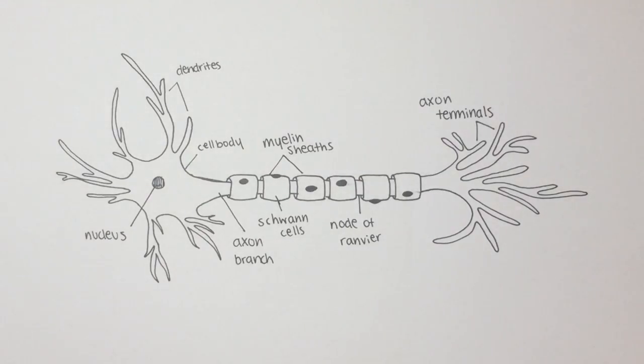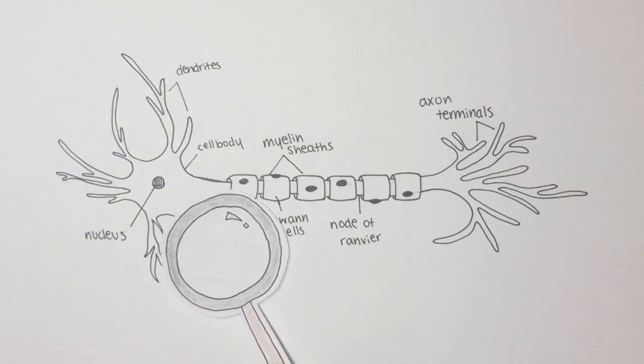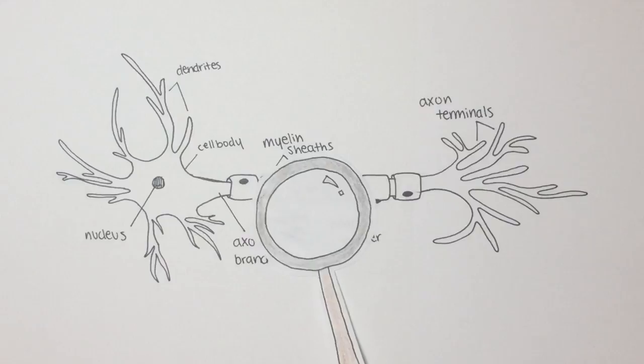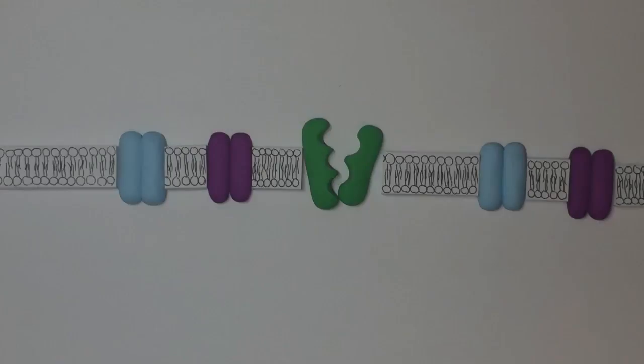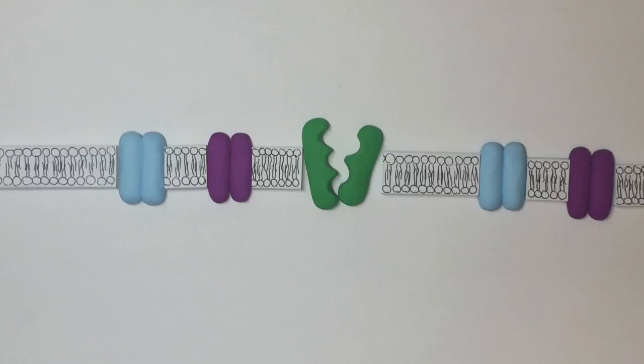Now let's take a closer look and see what really happens in a node of Ranvier. Looking at the membrane of a neuron, in this case the exposed portion called the node of Ranvier, we see that of course there is the phospholipid bilayer making up the membrane, which separates the cytoplasm of the neuron, pictured on the bottom,